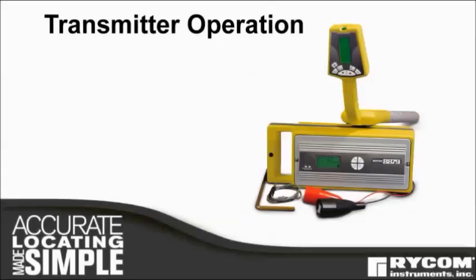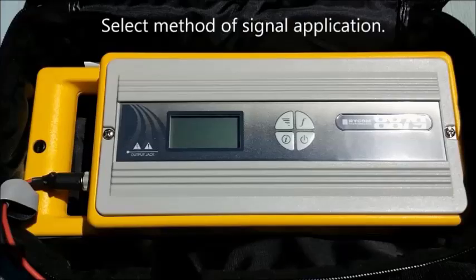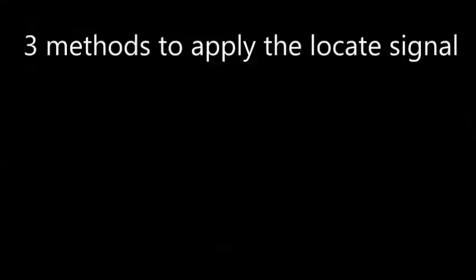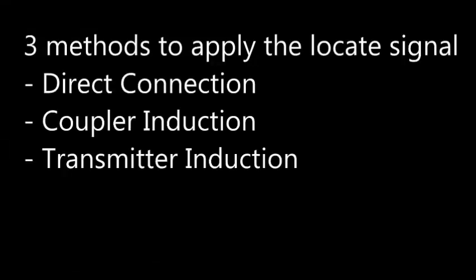To operate the transmitter, first select a method of signal application. There are three methods to apply the locate signal: direct connection, coupler induction, and transmitter induction.